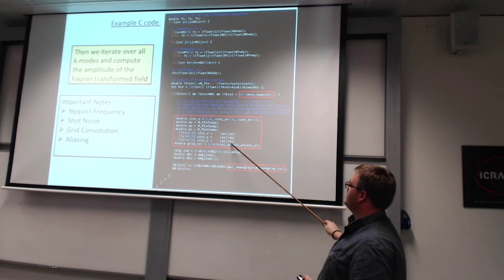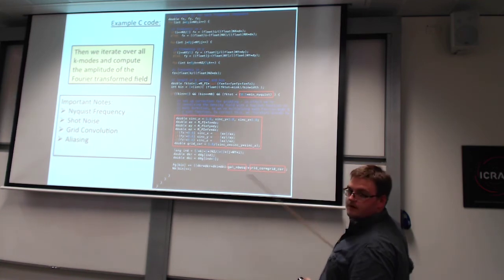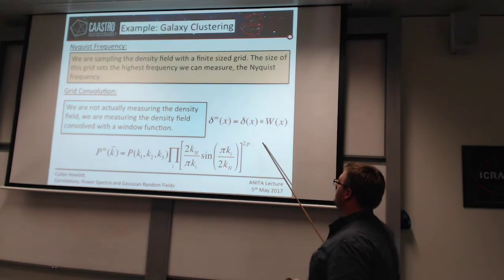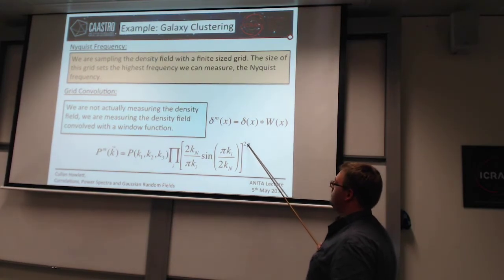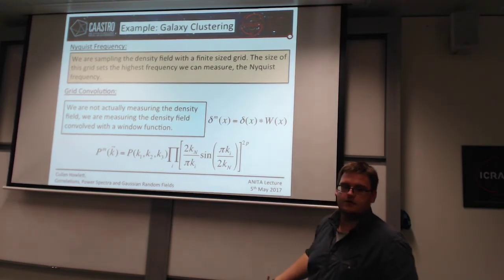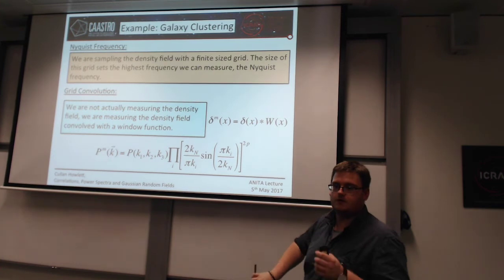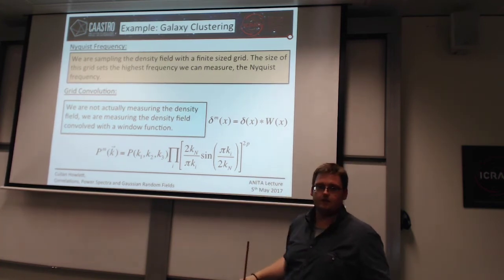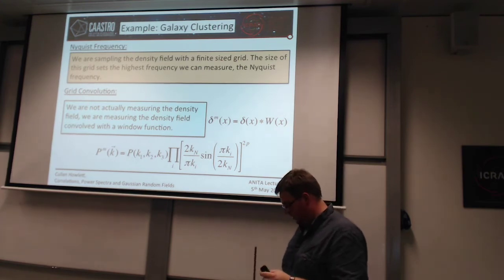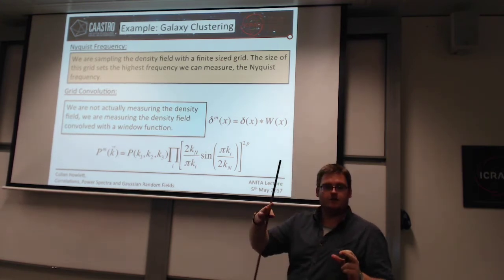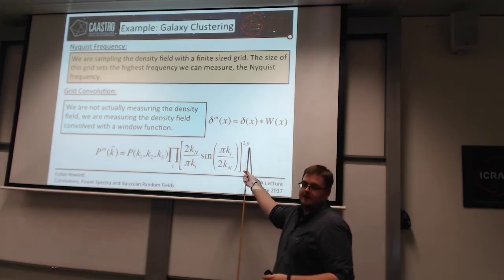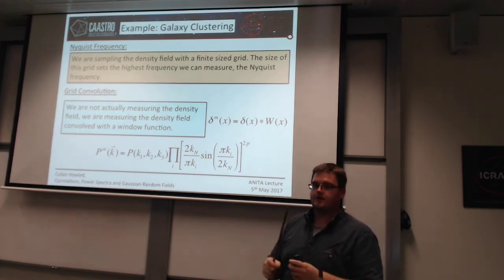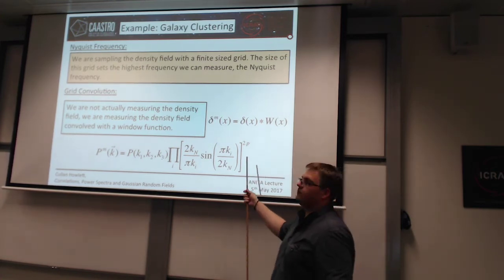This factor p will depend on what kind of gridding scheme you used. If you assign each point to the nearest grid cell, this is p=1. With cloud-in-cell weighting over the nearest four cells, this is p=2. With triangular shaped cloud weighting over the nearest three cells, this is p=3, and so on.